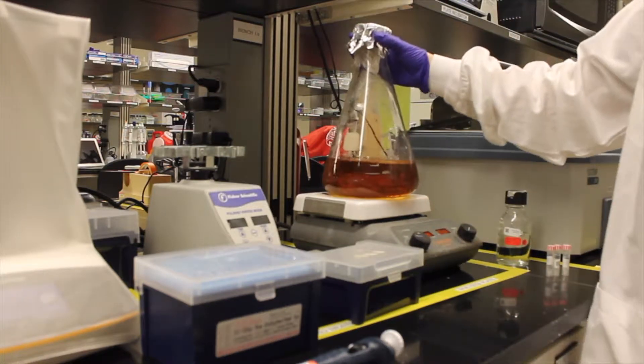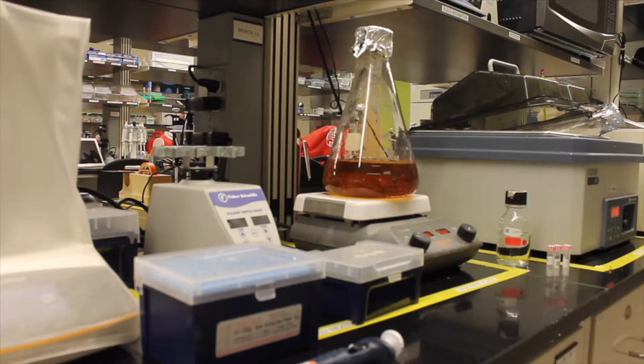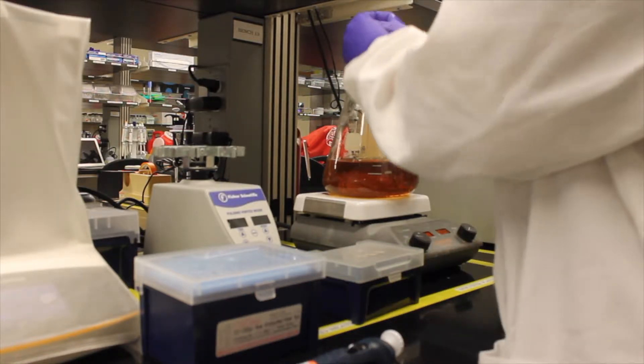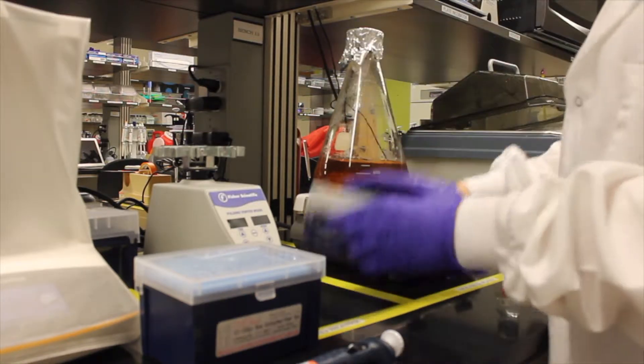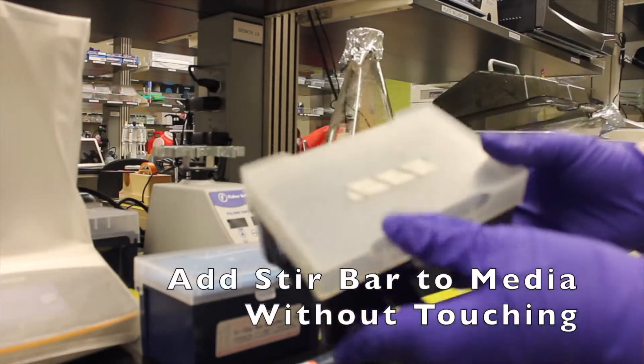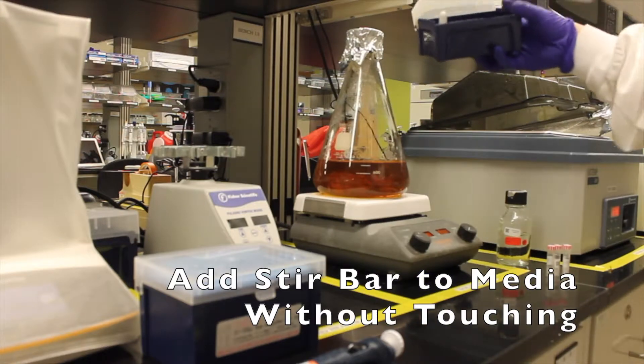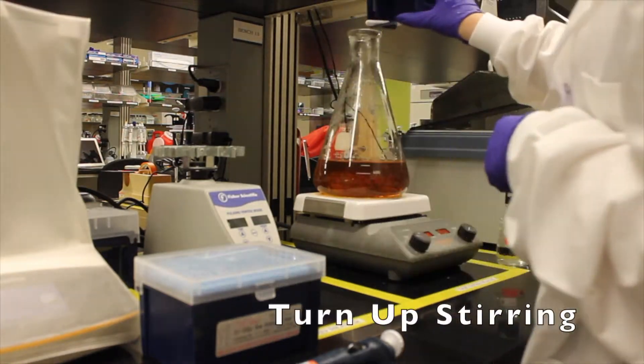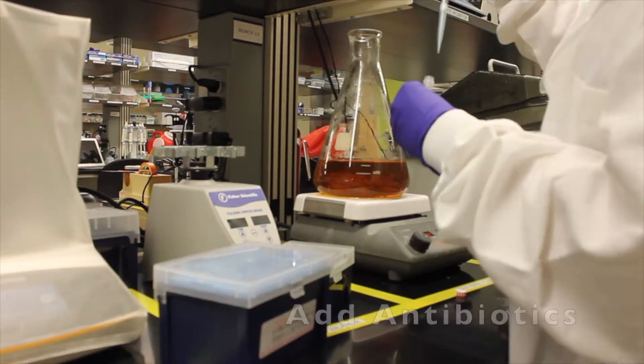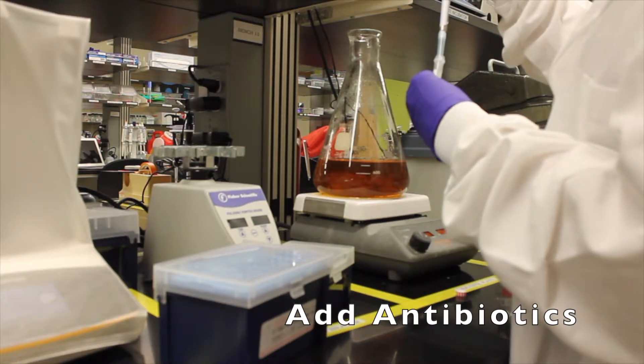We're going to take out our flask, place it on the stir plate, and add the autoclave stir bar without touching it using this technique. We're going to turn up the stirring and now add the antibiotics.